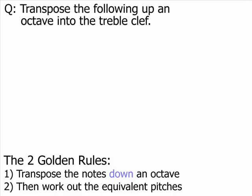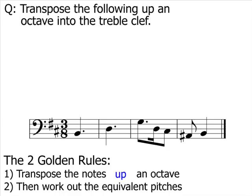So here's our melody. Now remember we can use the two golden rules in any order. However, it wouldn't make sense to work out the equivalent notes first in this example, as we'd end up with those nasty ledger lines again. It'd look like this.